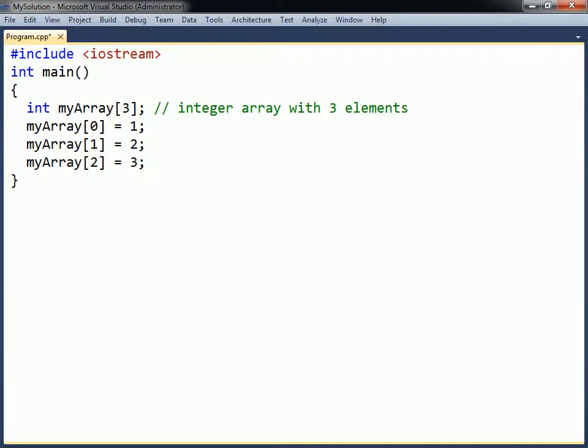To assign values to the elements you can reference them one at a time, by placing the element's index inside the square brackets, starting with zero.